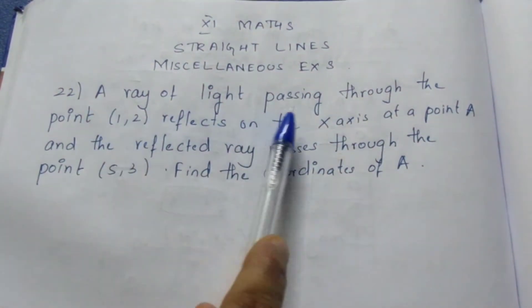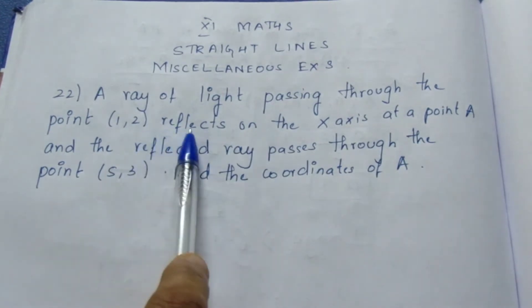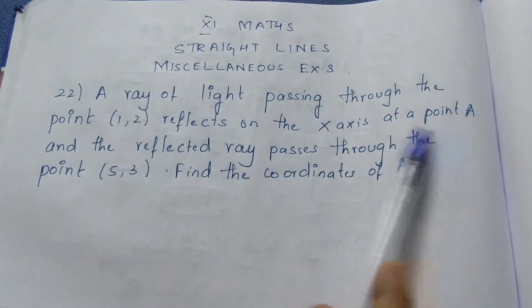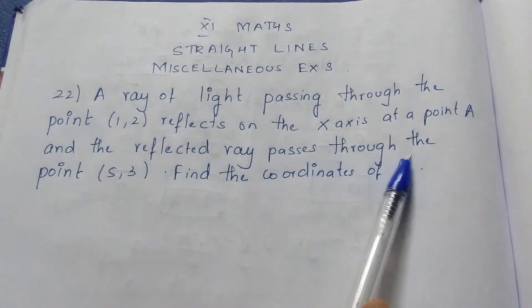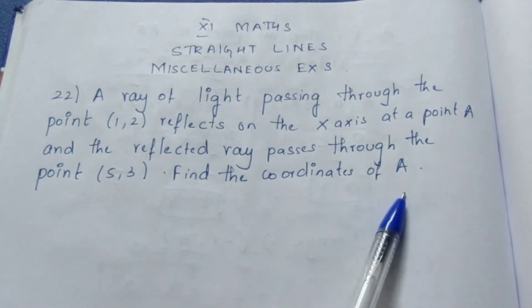Let's see the question. A ray of light passing through the point (1,2) reflects on the x-axis at a point A, and the reflected ray passes through the point (5,3). Find the coordinates of A.